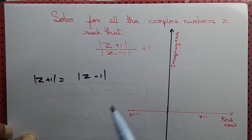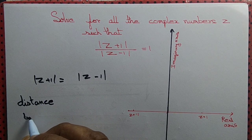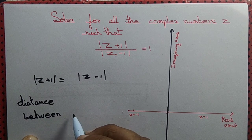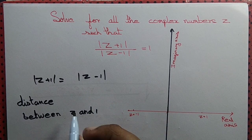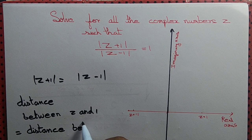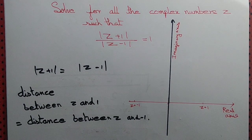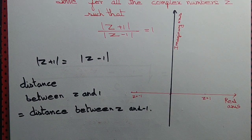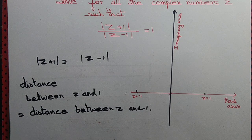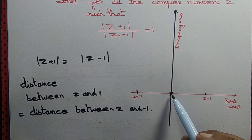We observe that this is the same as saying the distance between z and 1 — that is modulus of z minus 1 — equals the distance between z and minus 1. So on the complex plane we have the real axis and imaginary axis, with the points z equal to 1 and z equal to minus 1. The origin is clearly equidistant from both, so z equal to 0 is one such point.